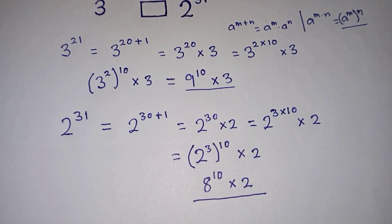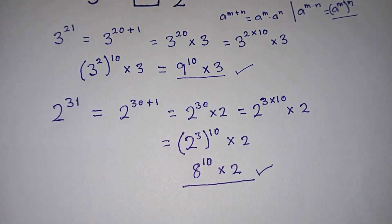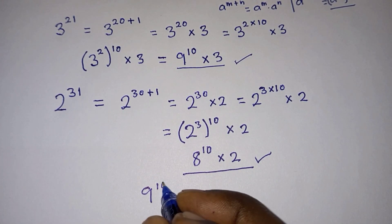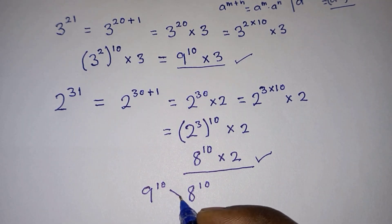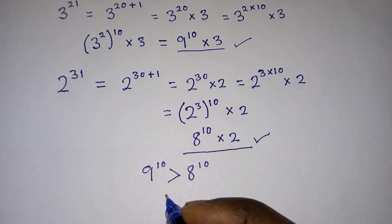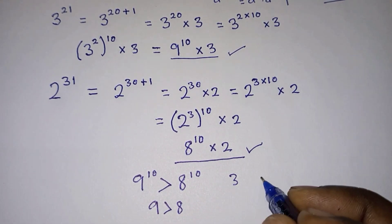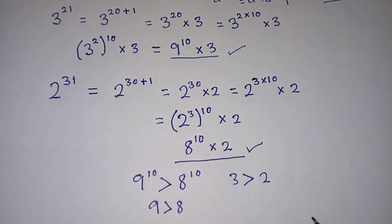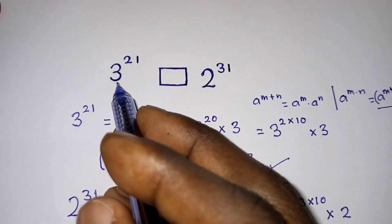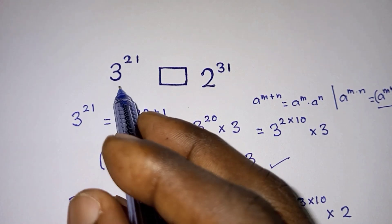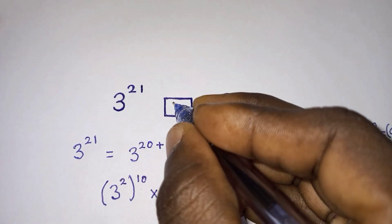Now let's compare these two numbers. First, let's compare the parts with the power of 10, and then those without powers. If we compare nine to the power 10 and eight to the power 10, the powers are the same so we consider the bases — nine is much greater than eight. Likewise, comparing three and two, it is obvious that three is greater than two. Since all the greater than signs favor the first value, it is clear that three to the power 21 is much greater than two to the power 31.